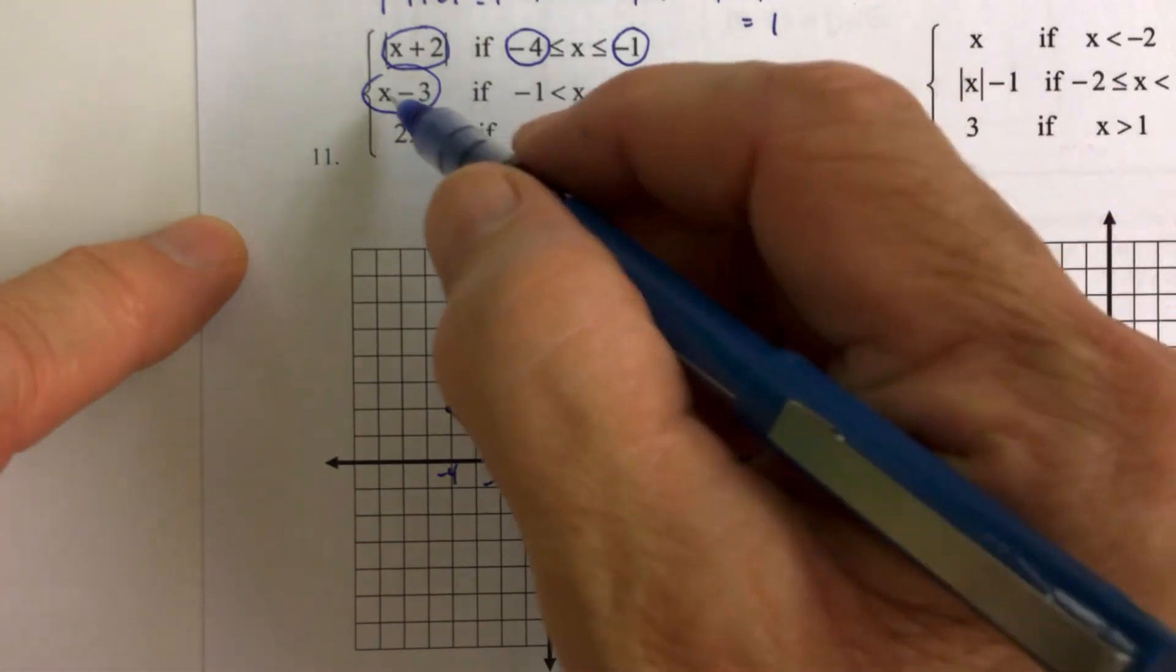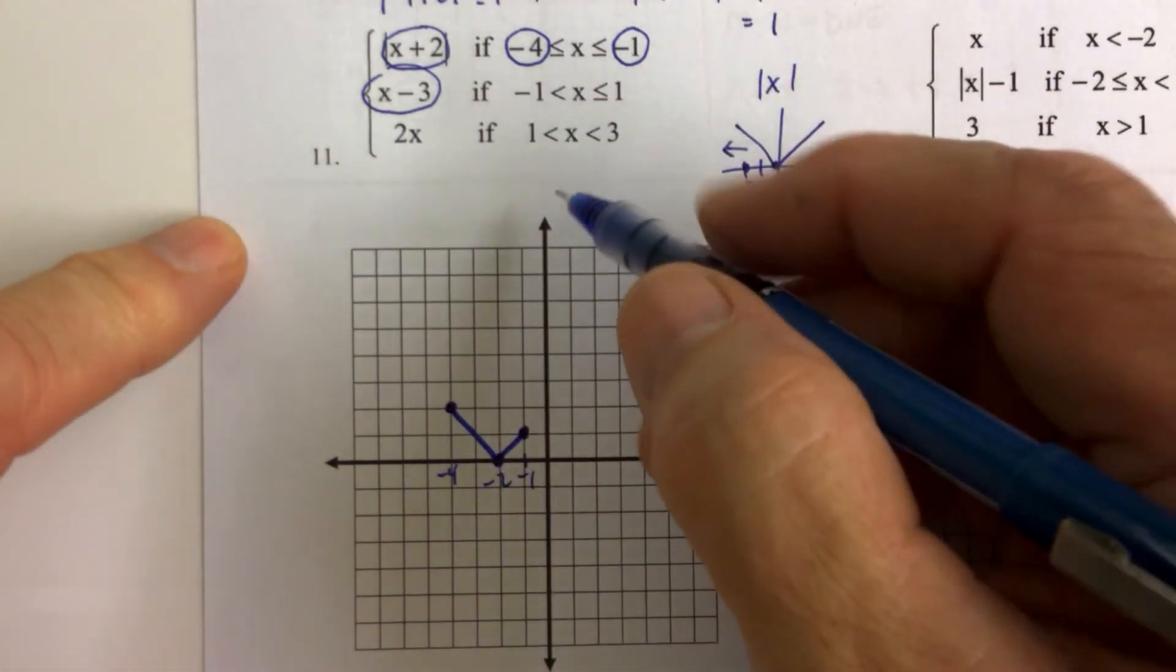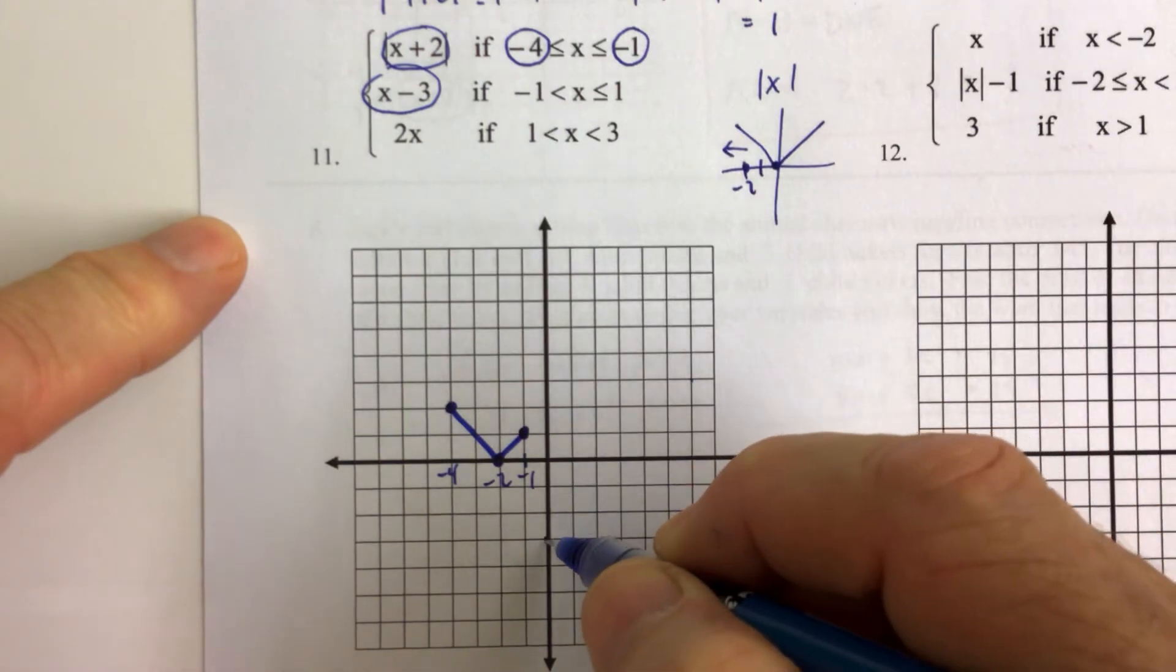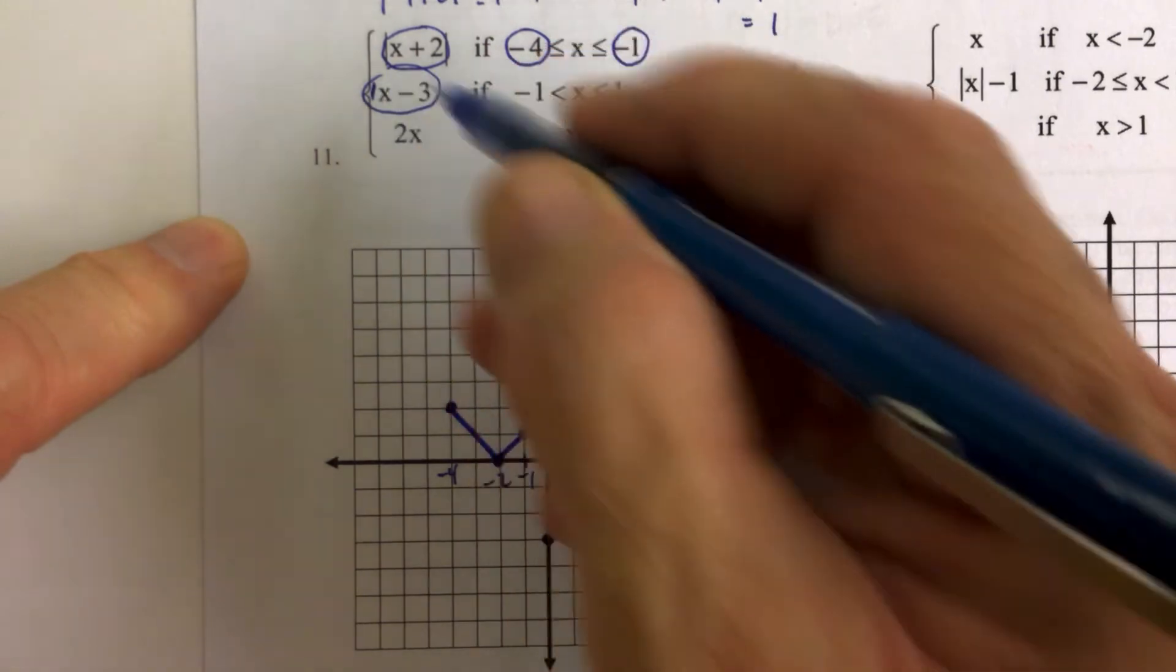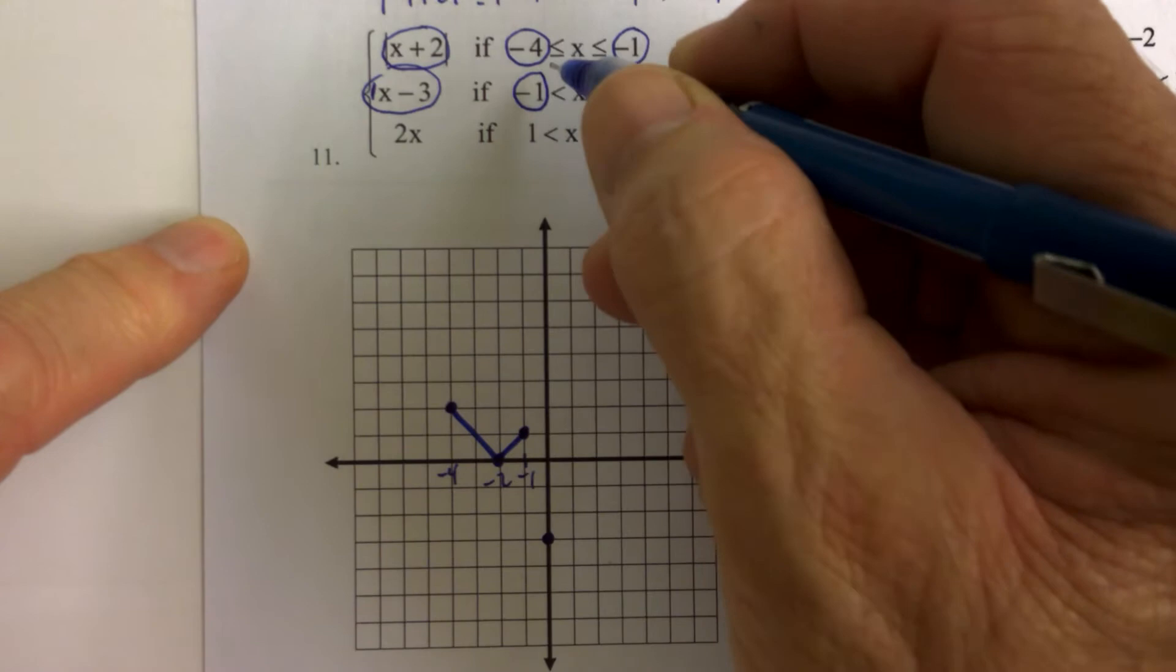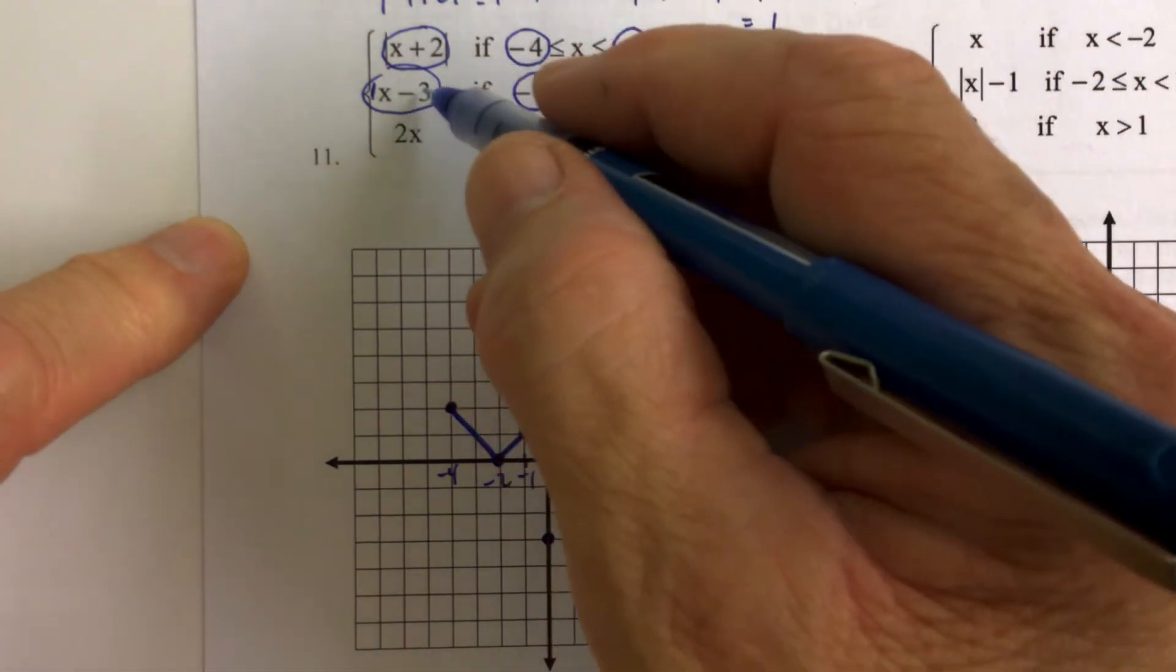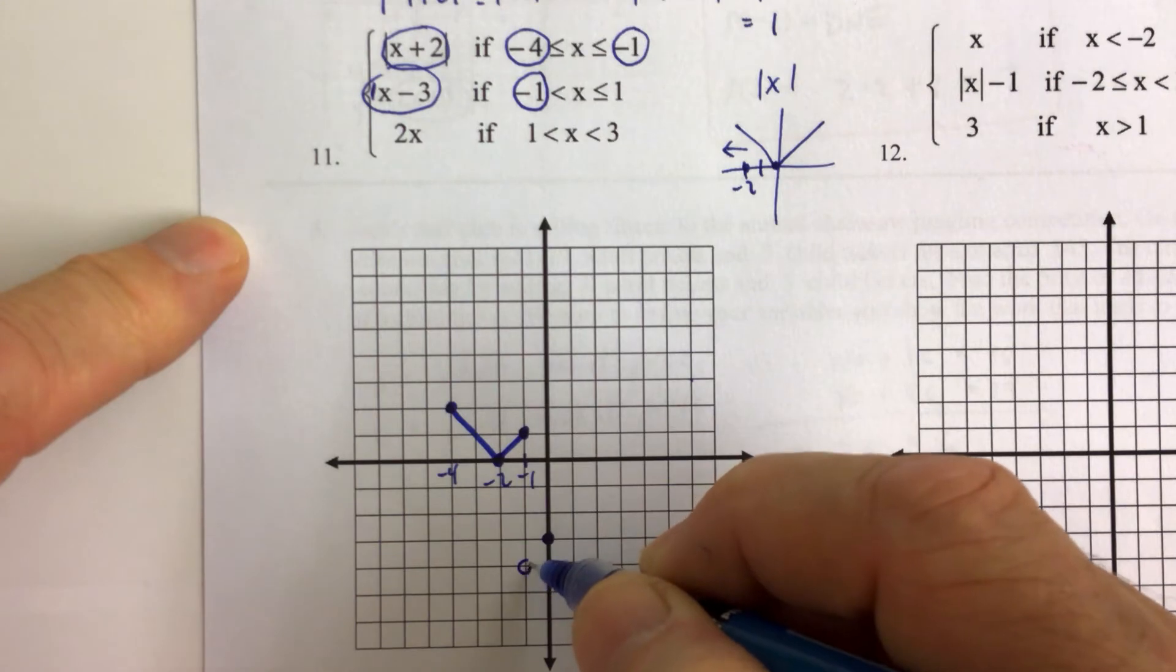Now, the second piece is linear. The linear function goes through negative 3 on the y-axis. It's got a y-intercept of negative 3. And it also has a slope of 1. So if it has a slope of 1, and we want to replace x with negative 1, negative 1 minus 3 is negative 4. Down 1 and over 1, you can find the other point that way.